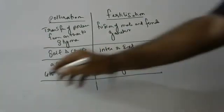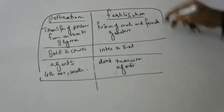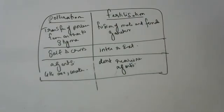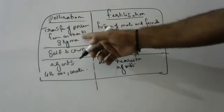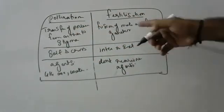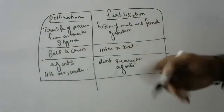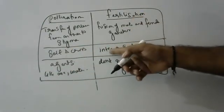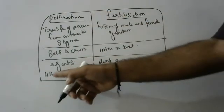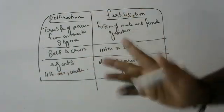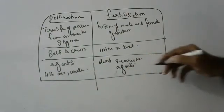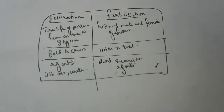So, to summarize for your exam: transfer of pollen from anther to stigma is called pollination; fusion of two gametes is called fertilization. Pollination — two types: self and cross. Fertilization — two types: internal and external. Pollination requires agents; fertilization does not. Notes will be there in the description. You can also practice from those notes.